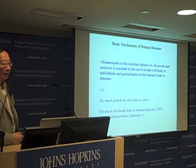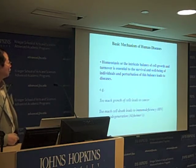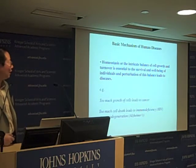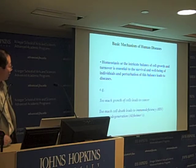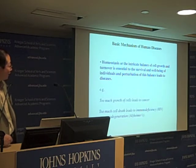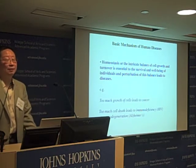With that in mind, it is perhaps not difficult to understand the basis and mechanism of various diseases. A key word is known as homeostasis — an intricate balance of cell growth and turnover that is essential for the survival and well-being of individuals. Perturbation of this intricate balance often leads to diseases. Too much growth of cells can obviously lead to cancer, and too much cell death or turnover can lead, in the case of the immune system, to immunodeficiency in the case of HIV, or neurodegeneration such as Alzheimer's and Parkinson's, because of excessive death of neuronal cells.